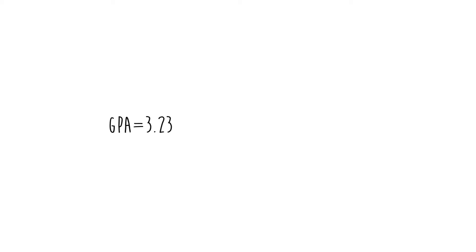Let's look at an example of a general linear model. GPA is equal to 3.23 plus 0.12 times IQ plus negative 0.006 times TV plus e. What this is saying is that one's GPA is made up of an intercept of 3.23, plus 0.12 times IQ — so every point you raise in your IQ, we could expect your GPA to go up by 0.12 — and then negative 0.006 times TV.